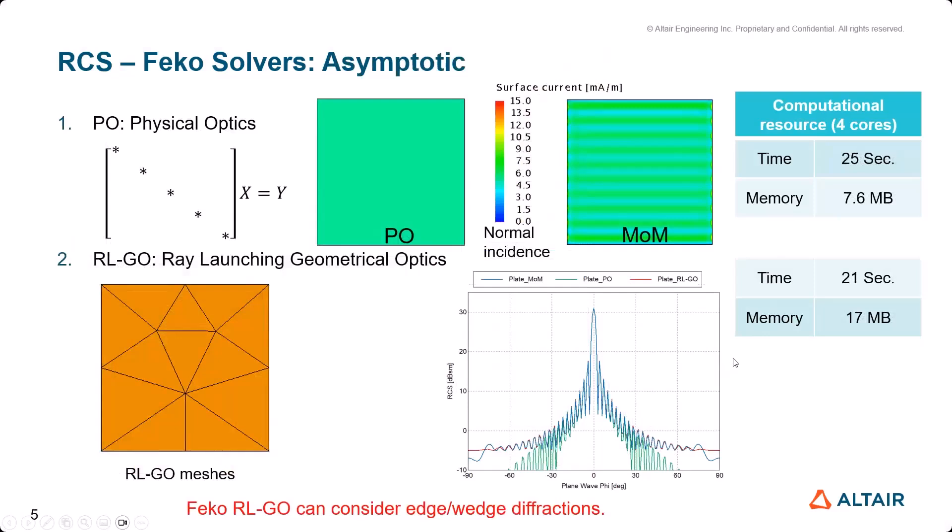Another RCS solver option is asymptotic EM solvers such as PO (Physical Optics) and RL-GO (Ray-Launching Geometric Optics).